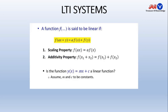Now we will study linear functions. What is a linear function? A linear function is said to be linear if it follows this property: f(x + y) = f(x) + f(y), where x and y are dependent variables and a is a constant. A linear function must follow two further properties: scaling property and additive property. Scaling property means f(ax) = a·f(x), where a is a scalar constant. Additive property means f(x1 + x2) = f(x1) + f(x2).